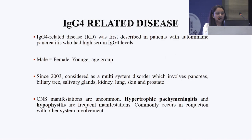IgG4-related disease was first described in a patient with autoimmune pancreatitis who had high serum IgG4 levels. It is considered a multisystem disorder involving the pancreas, biliary system, salivary glands, kidney, lungs, skin, and prostate. There could be hypertrophic pachymeningitis and hypophysitis if CNS involvement is present.